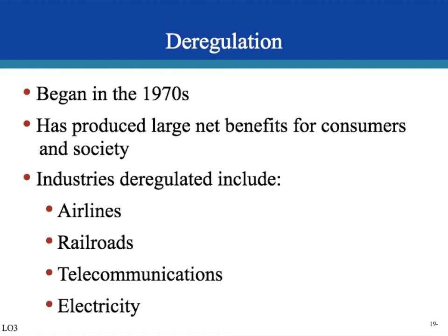Beginning in the 1970s, due to the inefficiencies of regulation, many industries started to be deregulated, such as airlines, railroads, telecommunications, and electricity. Most deregulation produced benefits for consumers and society — increased competition, lower prices, and increased net output. However, care must be taken, because some deregulated industries began engaging in unethical business practices, such as Enron, which created large losses for people. The financial crisis of 2007-2009 also showed that some regulation is necessary to prevent firms from engaging in bad business practices.